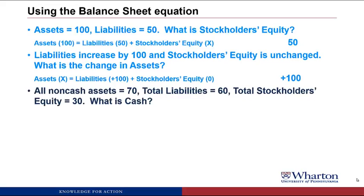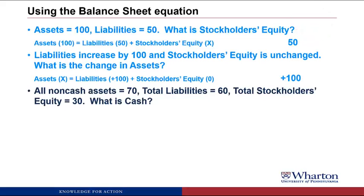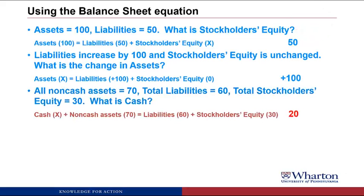Problem 3: All non-cash assets equals 70, total liabilities equals 60, total stockholders' equity equals 30. What is cash? We use the balance sheet equation, separating assets into cash and non-cash. Liabilities plus stockholders' equity total 90 on the right-hand side. Non-cash assets are 70 on the left. To be in balance, cash has to equal 20.